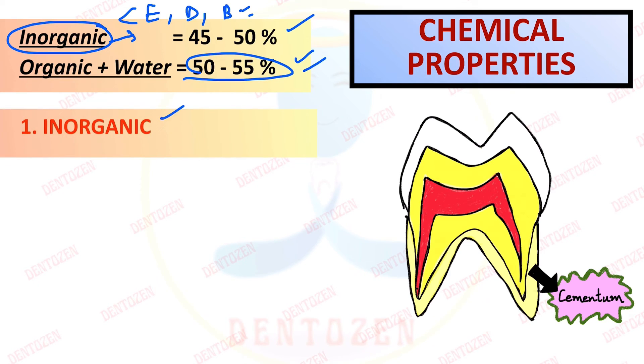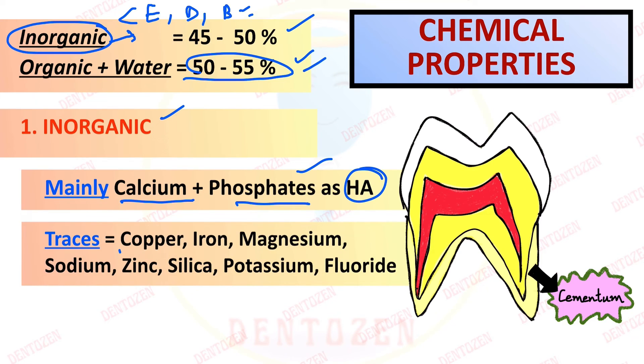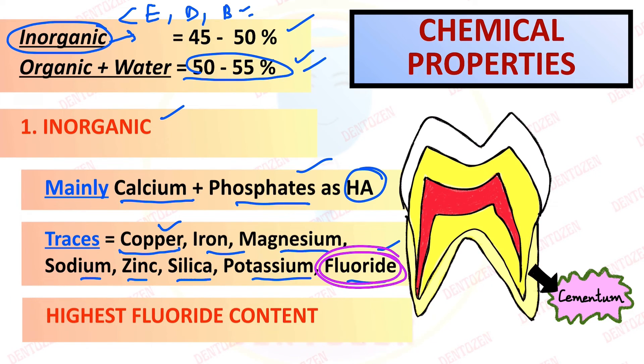Now let's see what are the inorganic components. It's mainly calcium and phosphates as hydroxyapatite. But traces of other elements like copper, iron, magnesium, sodium, zinc, silica, potassium, fluoride can be seen. Fluoride in cementum is highest. Very important entrance and viva question. So amongst all the mineralized tissues, highest fluoride content is seen in cementum. So it is highest in the cementum.